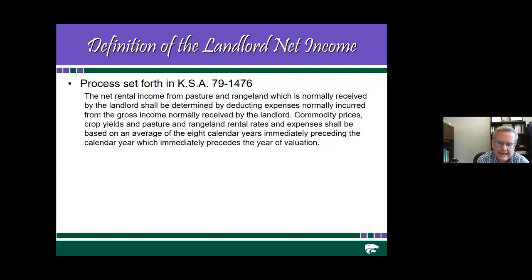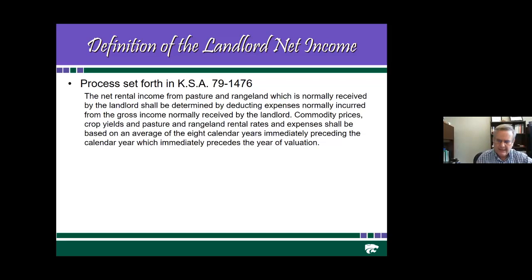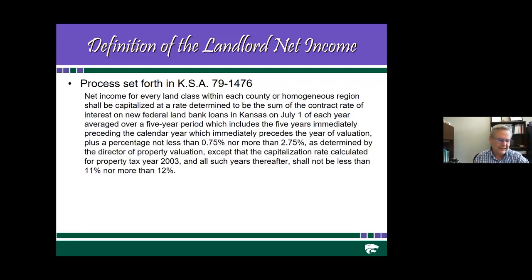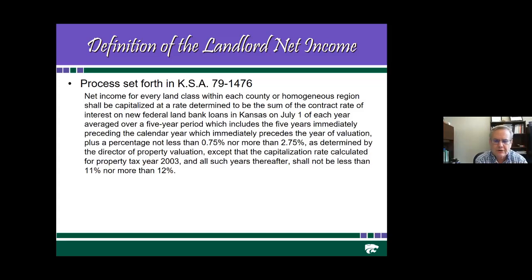For irrigated and non-irrigated cropland, the process is a little bit different from pasture. For pasture and rangeland, essentially a cash rent is used and landlord expenses are deducted. For cropland — either irrigated or non-irrigated — commodity prices, crop yields, and expenses are based on eight calendar years immediately preceding the calendar year. The net income is then capitalized. There are two parts to the formula: the first is getting something equivalent to a rental rate, and the second is the capitalization rate.